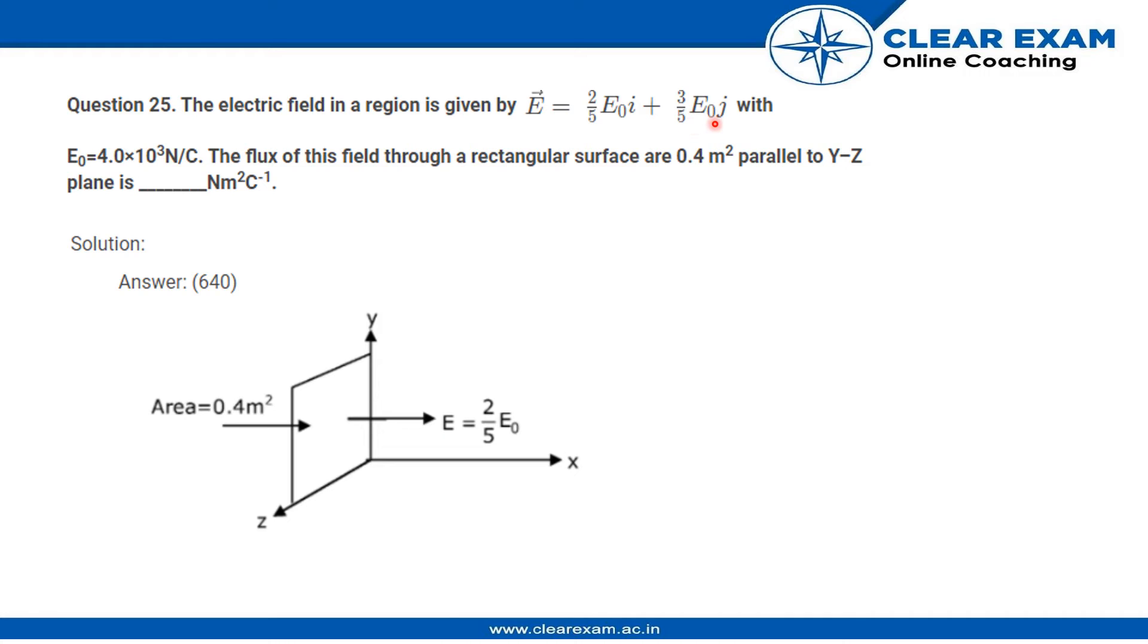Then we have the electric field in the j cap, that is the y direction. Whatever electric field is coming in the y direction, it is perpendicular to the area vector for the YZ plane rectangular sheet. Since the area vector and this E₀ vector are perpendicular, the electric flux will be equal to zero. For there to be electric flux, the electric field and area vector should be at an angle of zero degrees or 180 degrees.